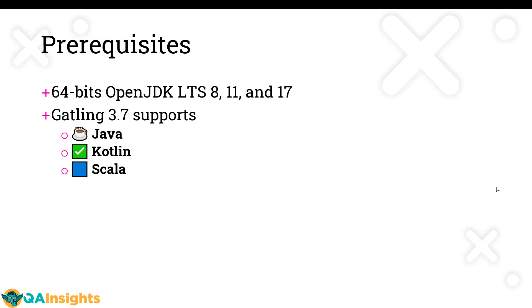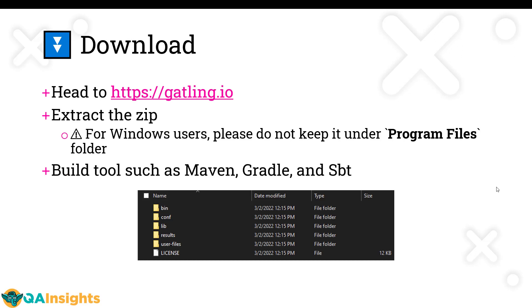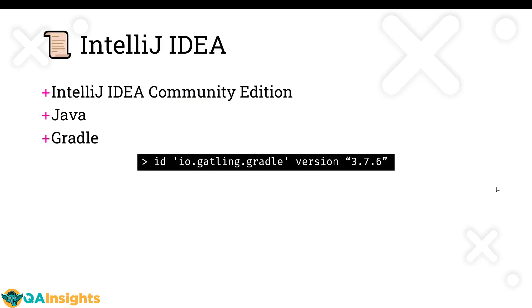Based on your operating system, you can download Gatling and get started. Just head to gatling.io and extract the zip file. On Windows, make sure you are not keeping the extracted contents under the Program Files folder due to some restrictions. If you are a developer, you can also check out build tools such as Maven and the Gatling SBT plugin for Scala. Throughout this course, we are going to use IntelliJ Community Edition with Java and Gradle.